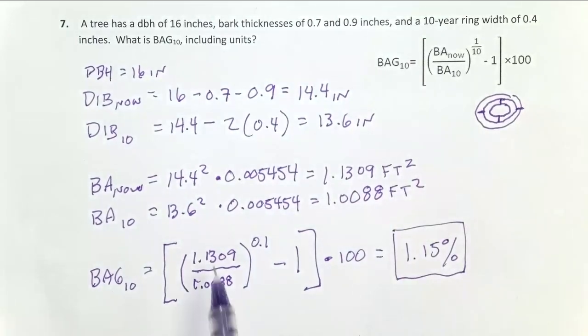So a common mistake here: people will flip this ratio sometimes, which you can see will give you a number less than one, which will give you a negative number. Trees don't shrink in diameter, so that's obviously incorrect.